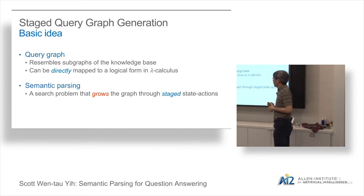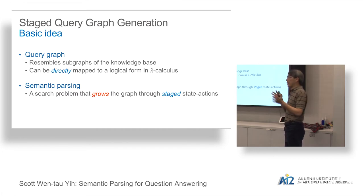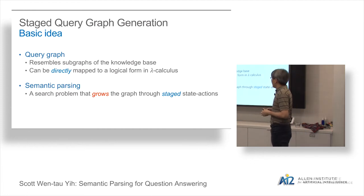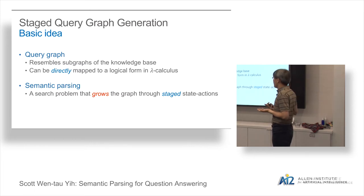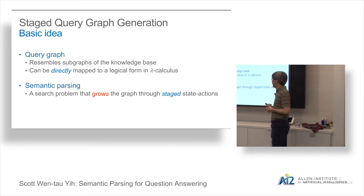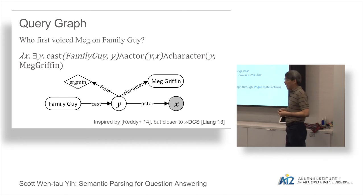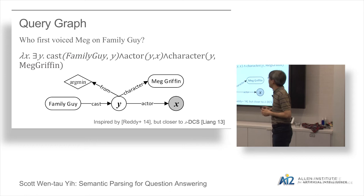The mapping to execution is straightforward — once we represent the query as a graph, it can be directly mapped to a formal query like lambda calculus. By doing that, we also make a reduction: the semantic parsing problem is framed as a state-action search problem. We start from zero and try to grow this query graph through what we call staged actions. Let me dive in a little to explain what I mean.